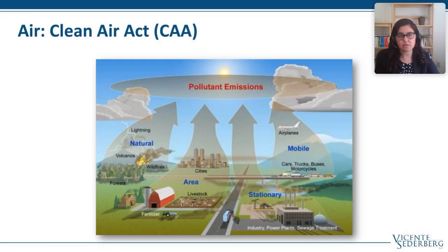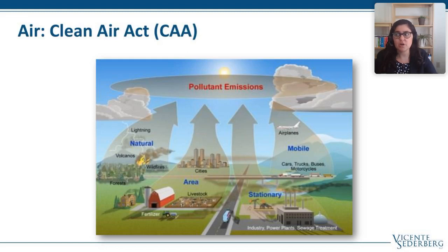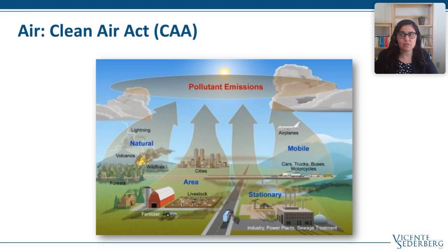Individual states or tribes can have stronger pollution laws — they just can't have weaker pollution limits than those set by EPA. The main air pollutant emitted by the cannabis industry is volatile organic compounds — VOCs — which can be emitted during the cultivation and processing of cannabis. These emissions can naturally occur during plant growth, and the majority occur during manufacturing and processing due to evaporation of solvents or other chemicals used to extract from the cannabis plant. With those emissions also come odor control technologies being implemented or required in a number of states.